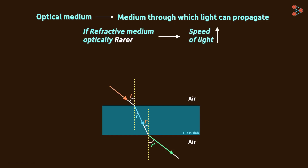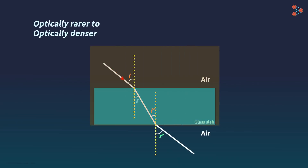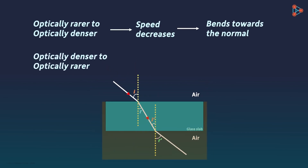Optical objects are those through which light can propagate — they must be transparent, whether it be air, glass, or water. Dense medium is one in which the speed of light is less and density is more. Rare medium is one in which the speed of light is more and density is less.